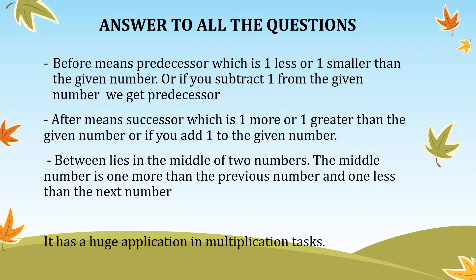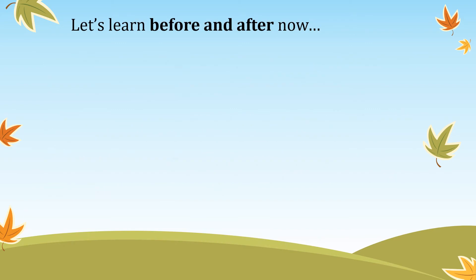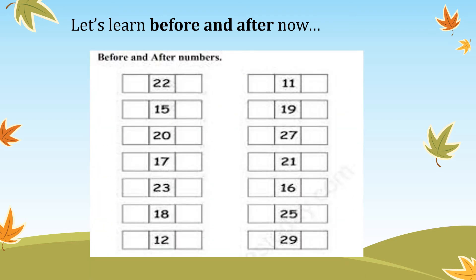Now let us have a pictorial formation of before and after. Here is your worksheet for before and after. You can see there are boxes — one box before and one box after the given number. For example, 22 is the given number. Before 22 is 21, because we subtract 1 from 22.